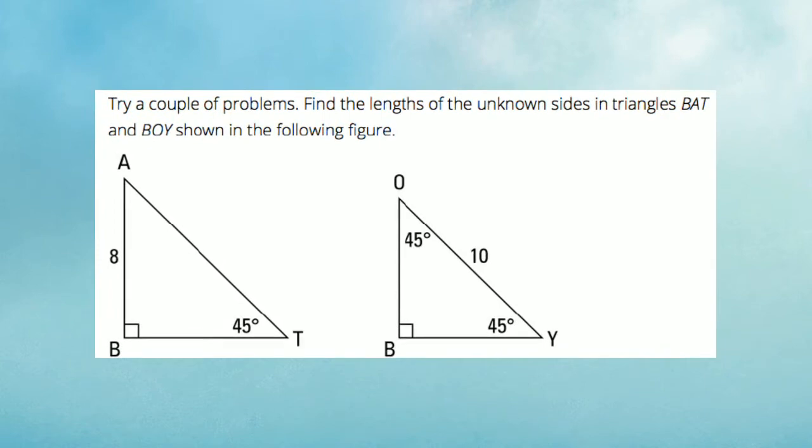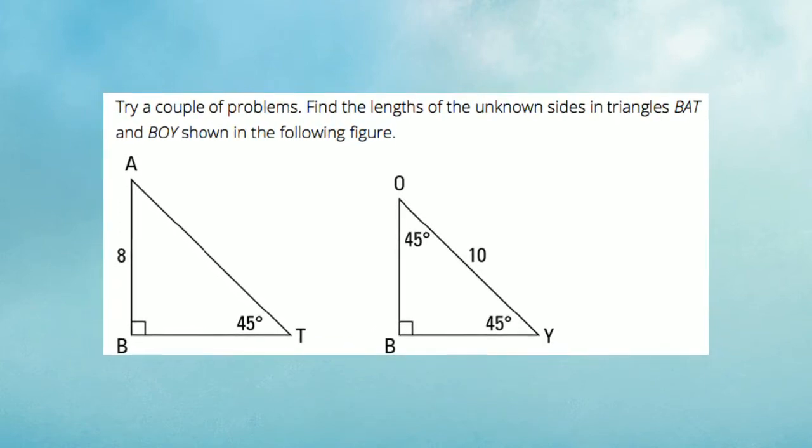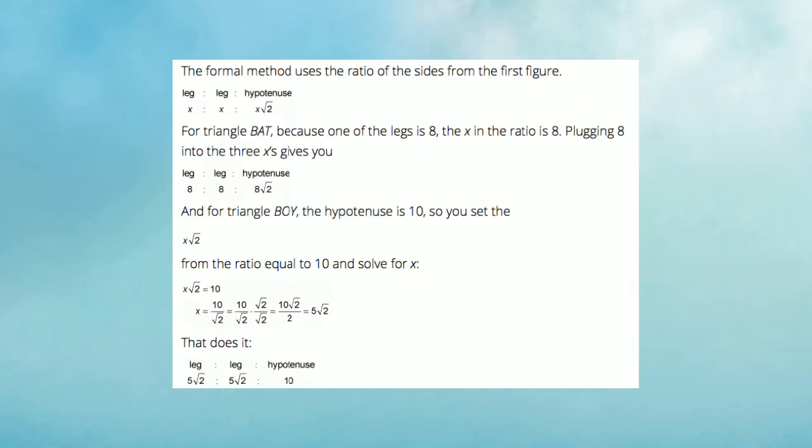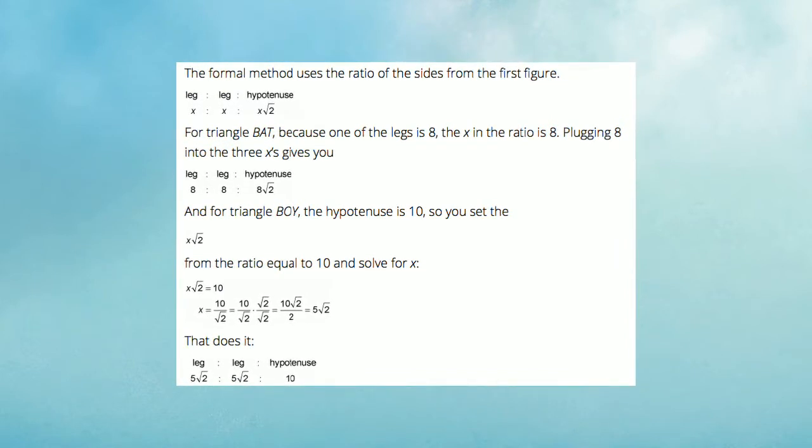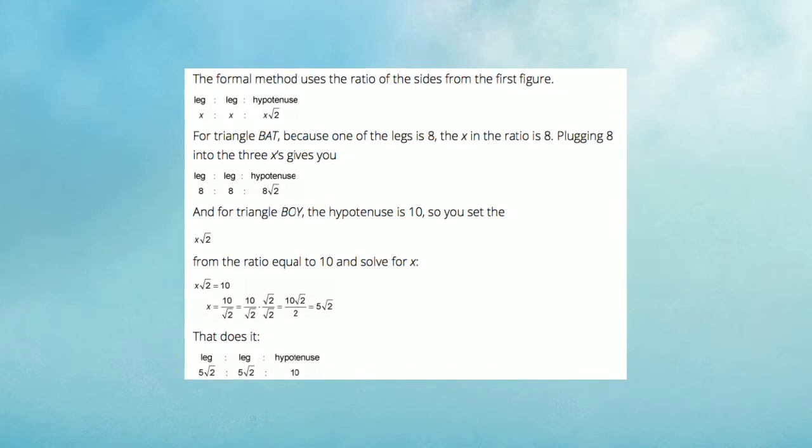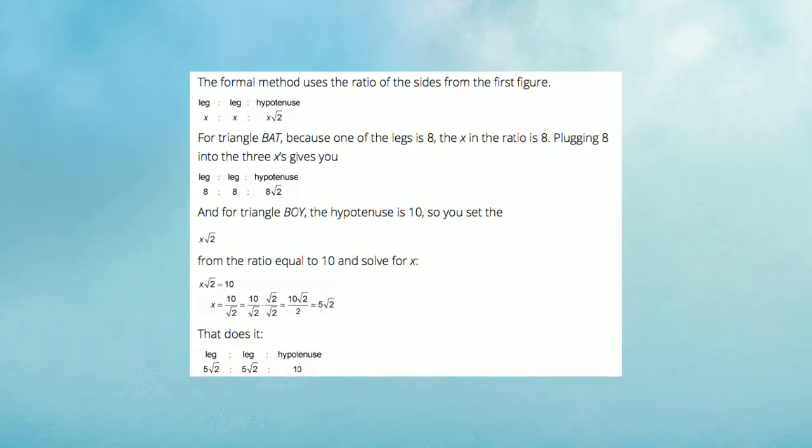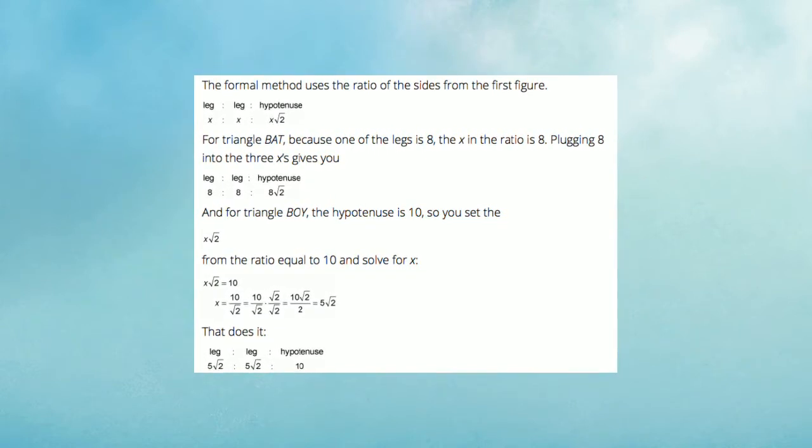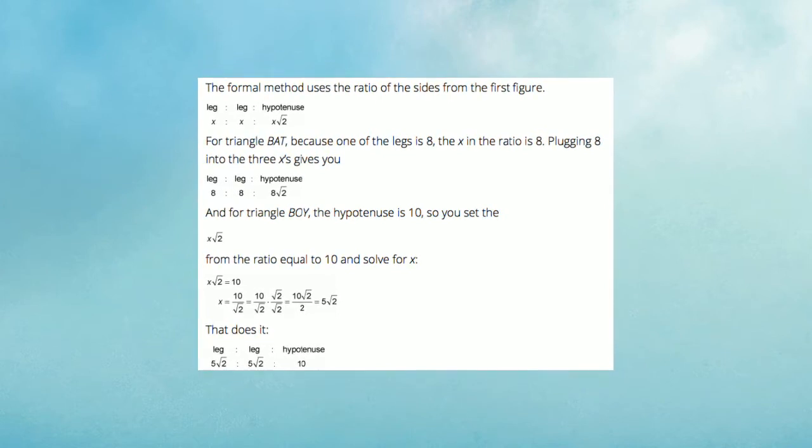As you can see, these are both 45-45-90 triangles, and thus they are similar. We can use the special properties of the 45-45-90 triangle to solve for its side lengths. Using the ratio of x to x root 2, we know that the triangle BAT has legs of 8 and a hypotenuse of 8 root 2.